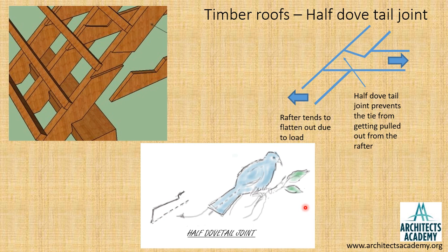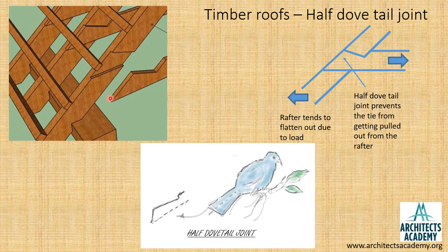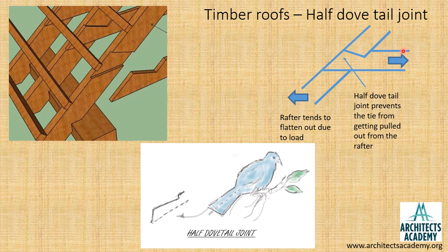Now let us see the joint between the collar and the rafter. This joint is called the half dovetail joint, derived from the tail of the doe. The rafter is partially cut inside to create a housing, and the collar is inserted from the side and nailed. This particular shape reduces the tendency of the collar to get pulled out from the rafter, which is why the collar is shaped this way.